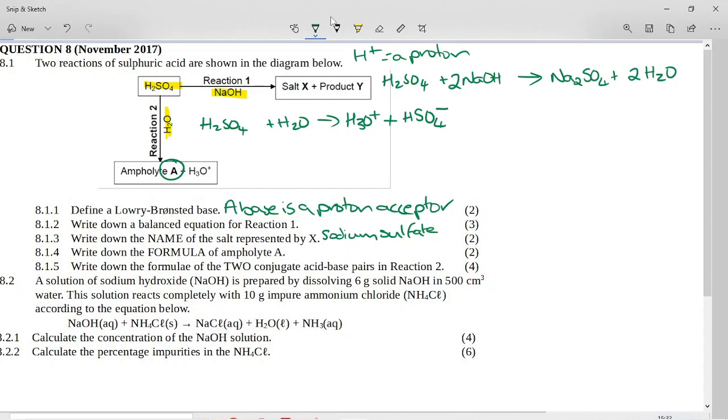Charges on the left add up to zero, charges on the right add up to zero. So this is the product of the first ionization of sulfuric acid. With the second ionization, you'll produce another hydronium ion.